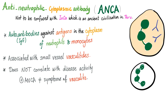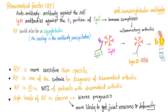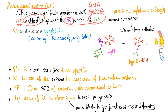ANA are associated with arthritis. ANCA, on the other hand, is associated with vasculitis. Rheumatoid factor is an antibody against an antibody — like a dog chasing its tail. It is an IgM antibody against the Fc portion of IgG, forming an immune complex.